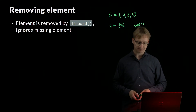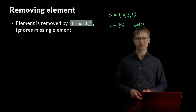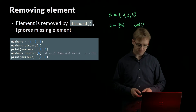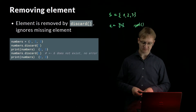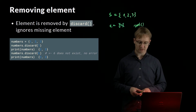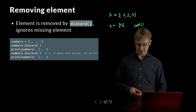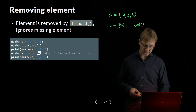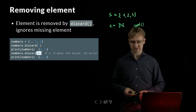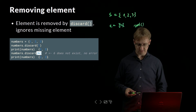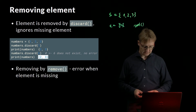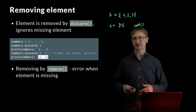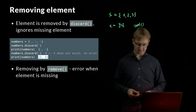How to remove elements? To remove, we can use the method DISCARD, which ignores if the element is missing. I have a set of numbers 1, 2, and 3. I try to discard 1 — it is removed and I have a set of 2 elements. Now I try to discard 6. Because I don't have 6, nothing happens and my set is still 2 and 3. There is also a method called REMOVE, which does the same but gives an error if I try to remove something not in the set.